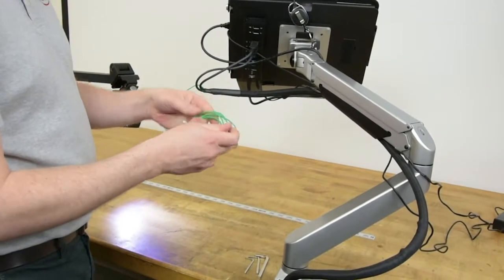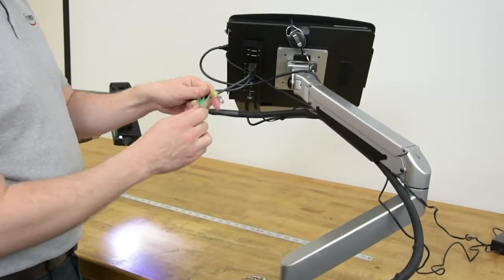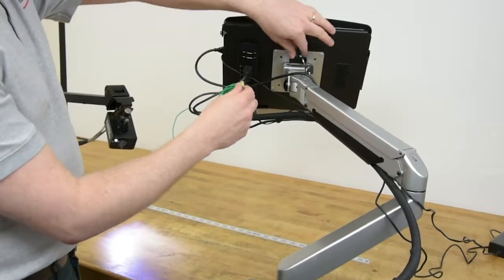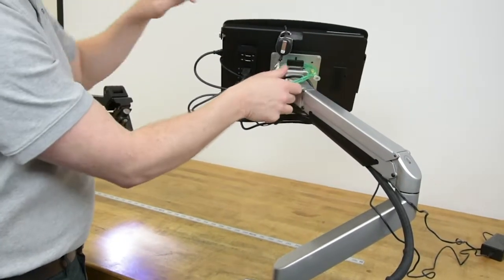One more thing I want to mention, you see this green ground wire which is hanging down. This is an extra ground. The cables are all shielded, and you shouldn't need this extra ground, but it's there just in case.